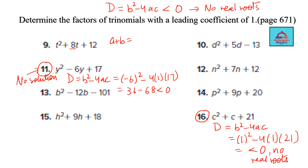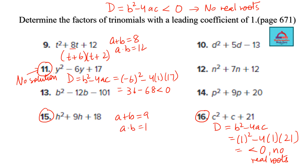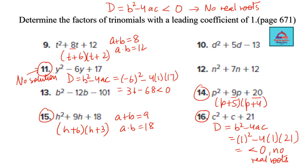For the remaining questions: sum 8, product 12 gives (t + 6)(t + 2). Sum 9, product 18 gives (p + 6)(p + 3) for question 15. Sum 9, product 20 gives (p + 5)(p + 4). Sum 7, product 12 gives (n + 4)(n + 3). Check the discriminant for the remaining two and apply the same middle term splitting method.